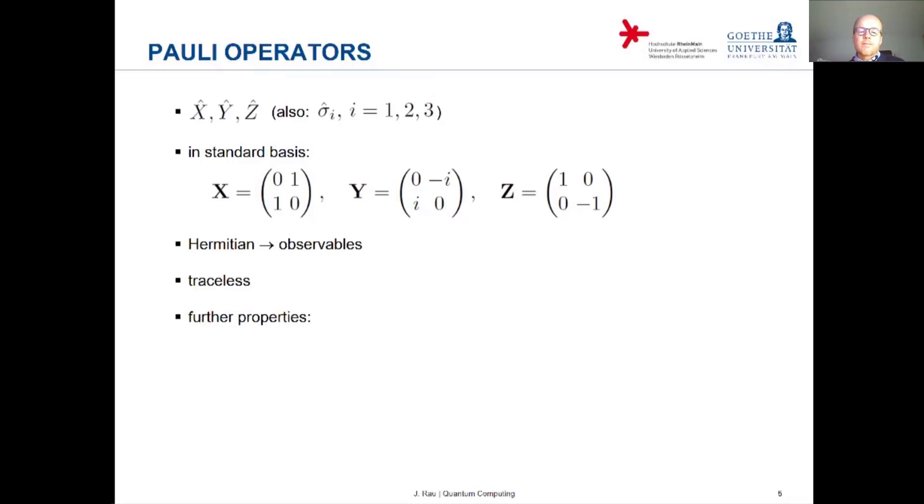And a few more properties that probably you remember: the squares of all the Pauli matrices are equal to the unit operator. And when you multiply Pauli operators with each other then the result is again a Pauli operator. For example Pauli X times Pauli Y is i times Pauli Z and so on.